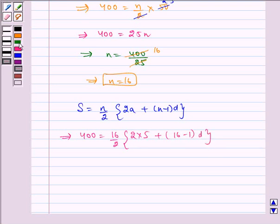Solving this, this gets cancelled by 8, so 400 is equal to 8 multiplied by 10 plus 15D, which implies 400 is equal to 80 plus 120D.